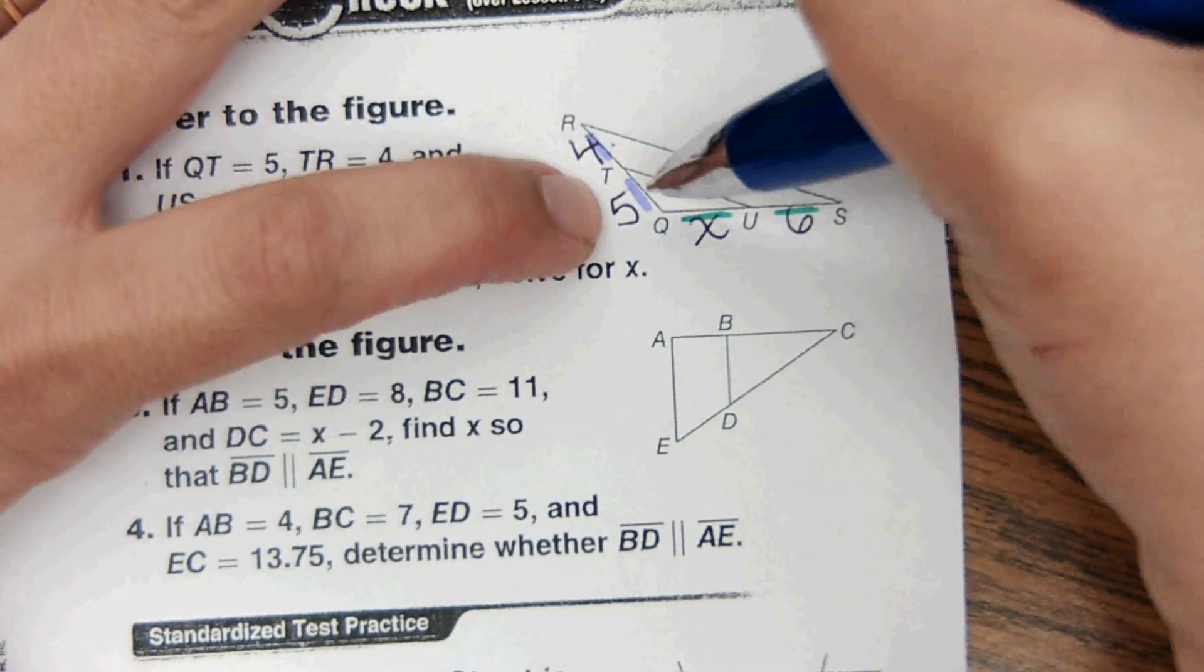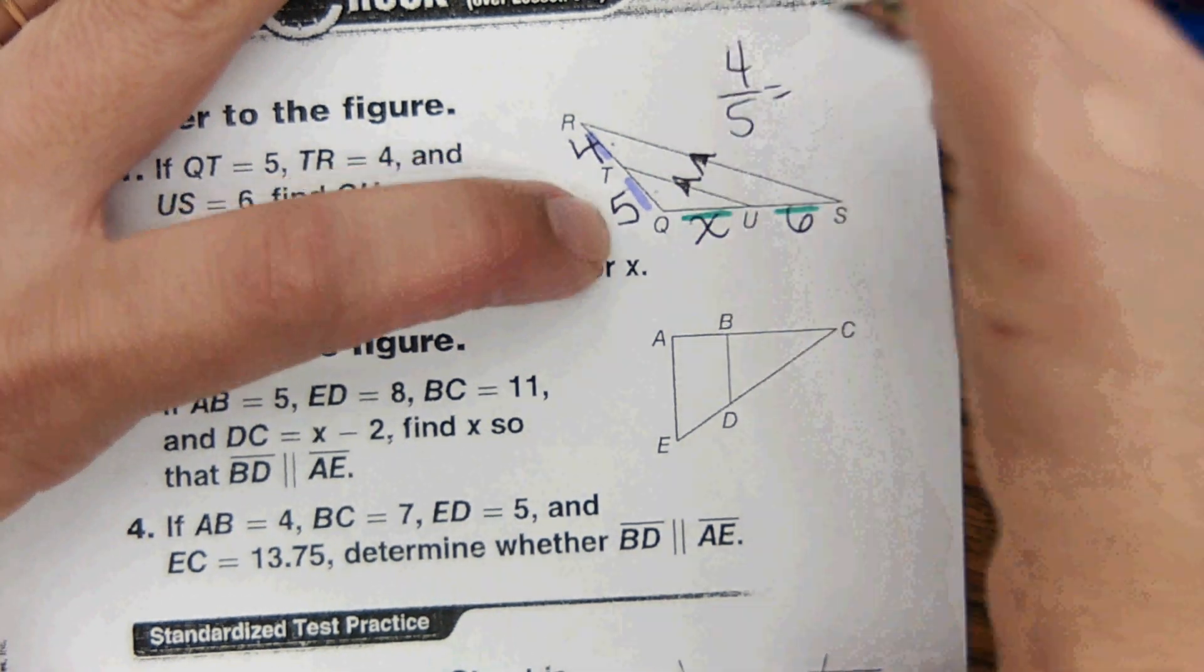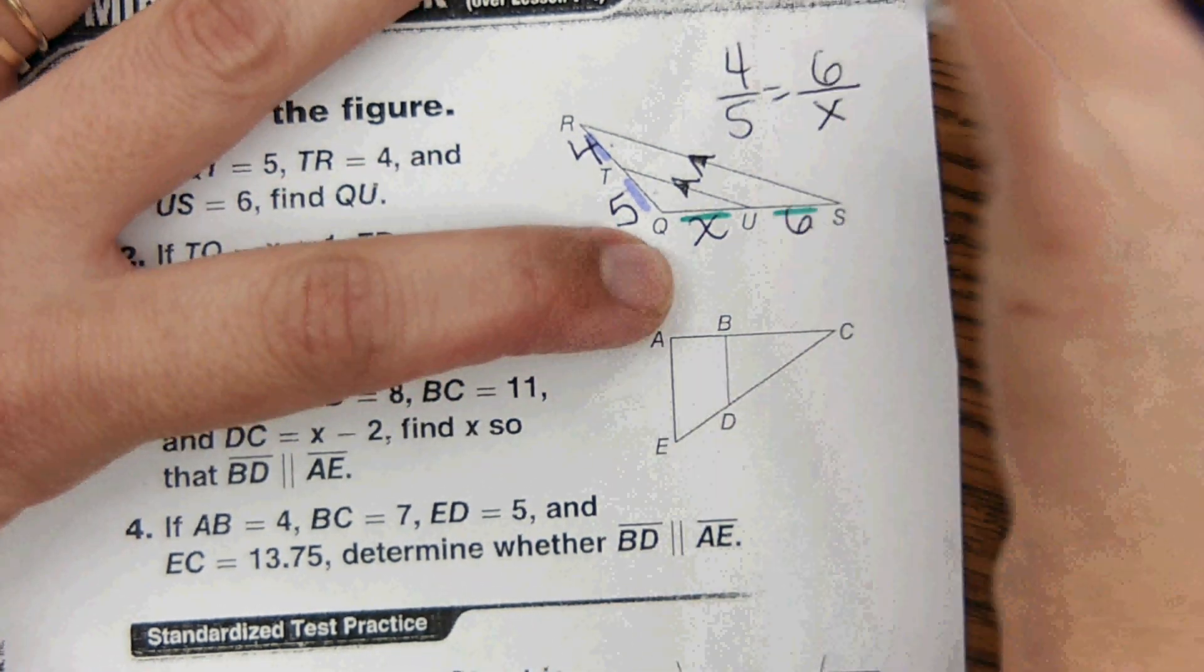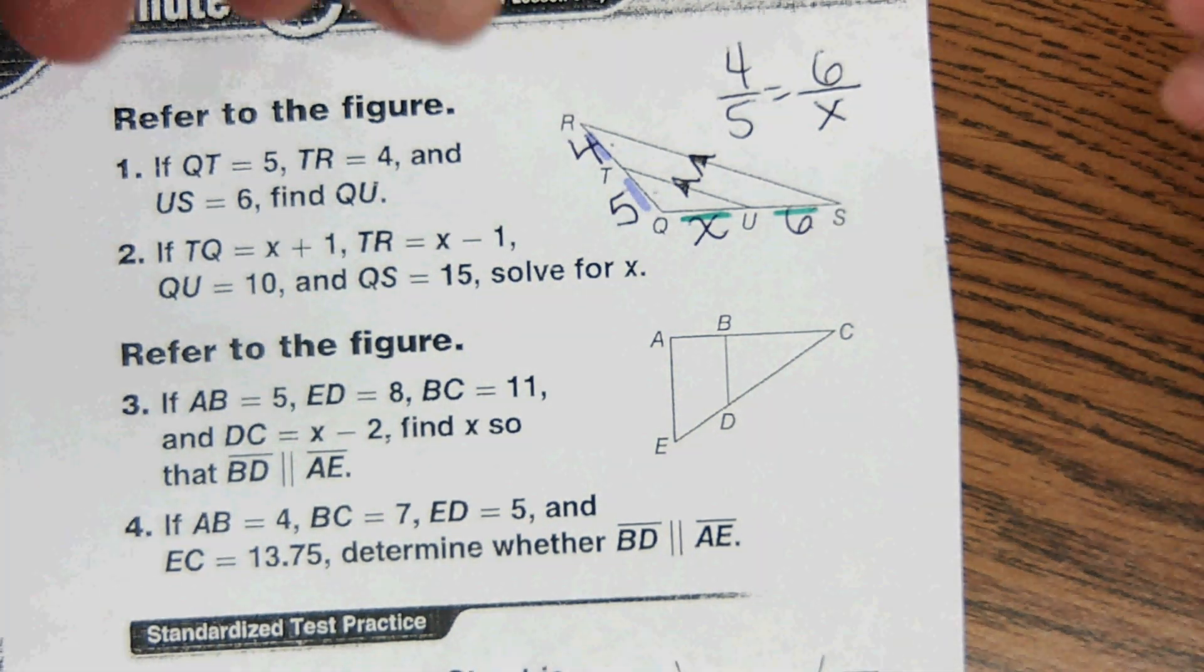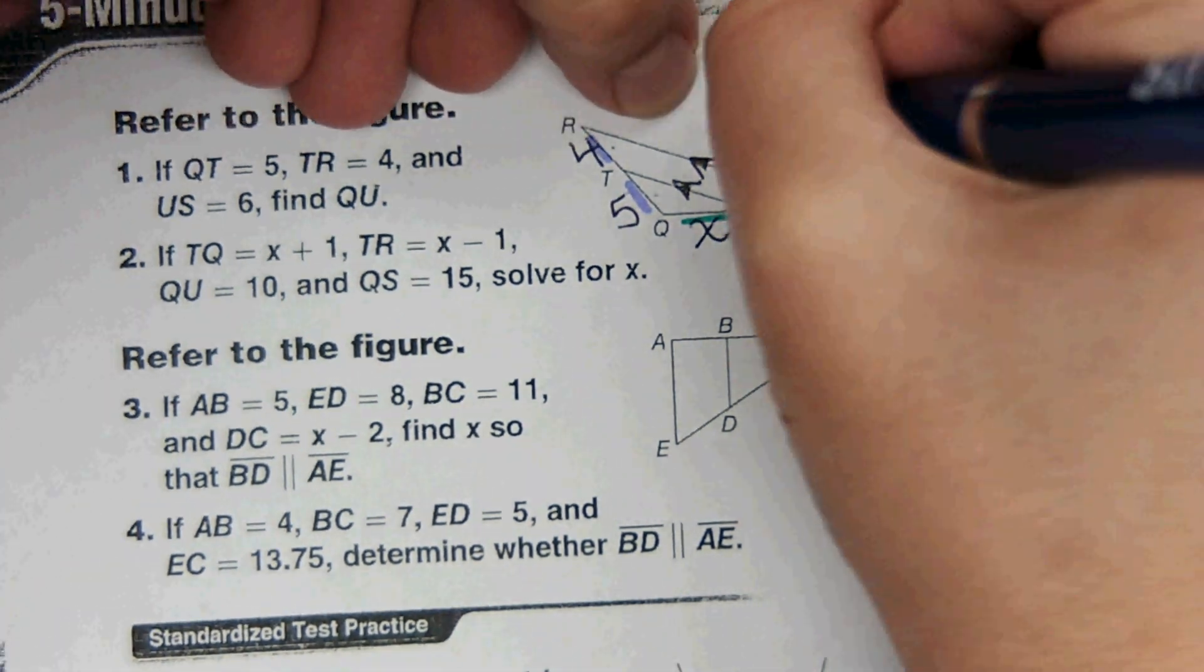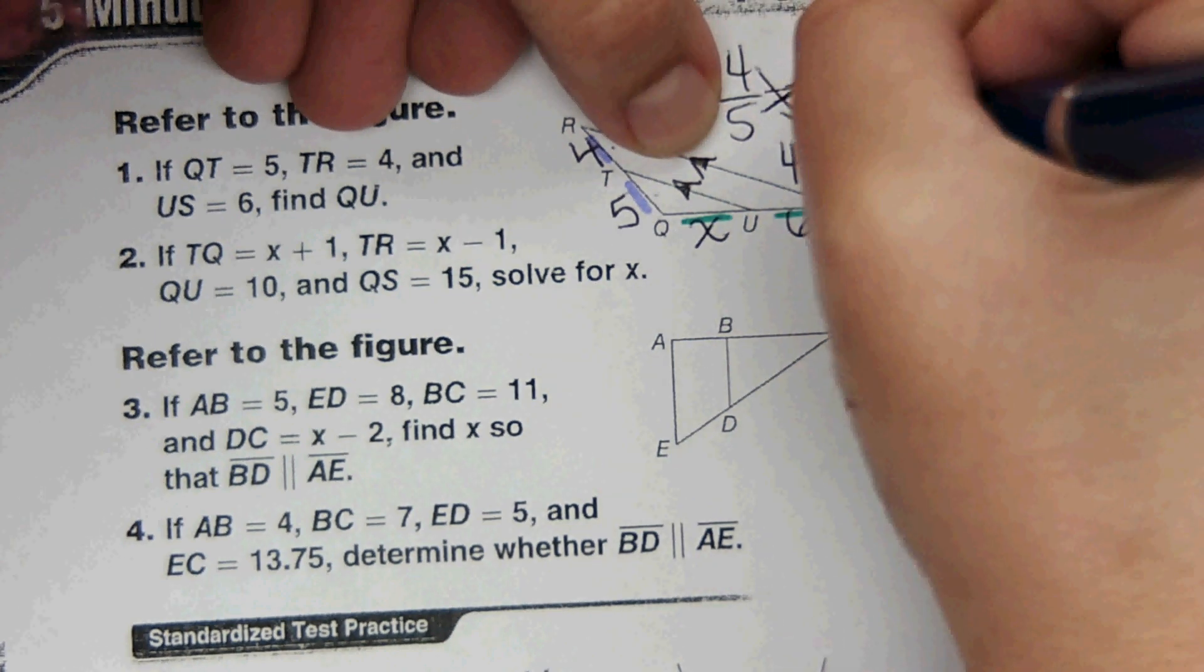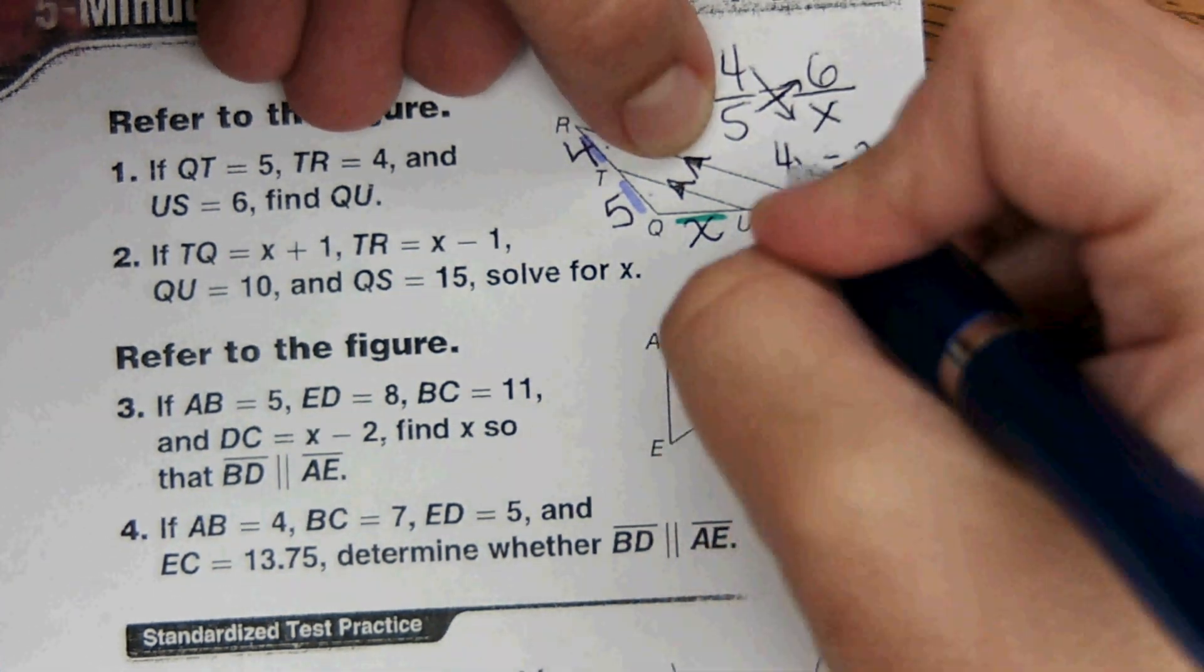Okay, so we're going to do four over five equals six over x to find out what x is. So this to this is in the same ratio, this to this, and then you can cross multiply to solve.